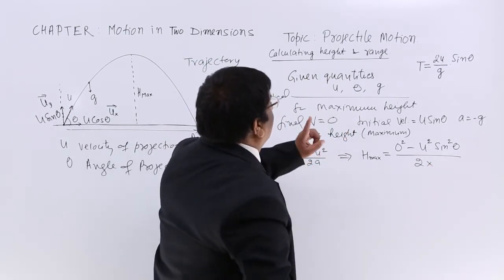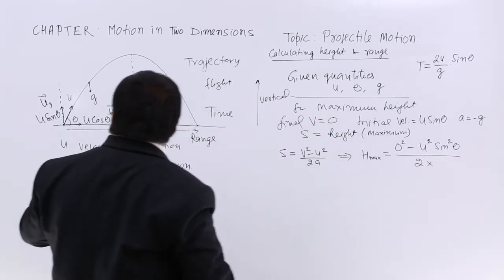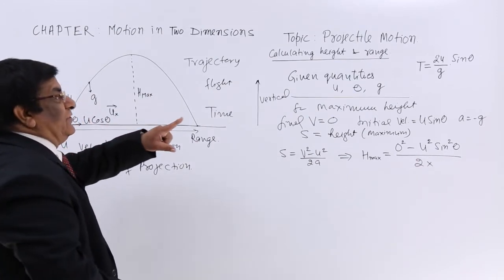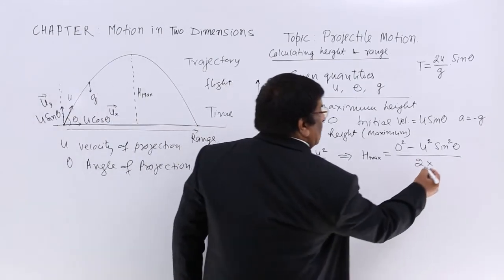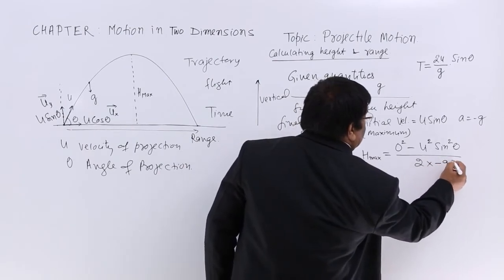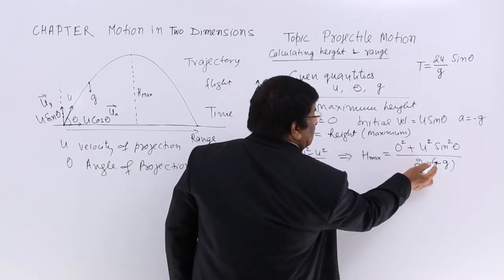What is acceleration? Acceleration is -g, so we write minus g here. Minus minus cancels out.